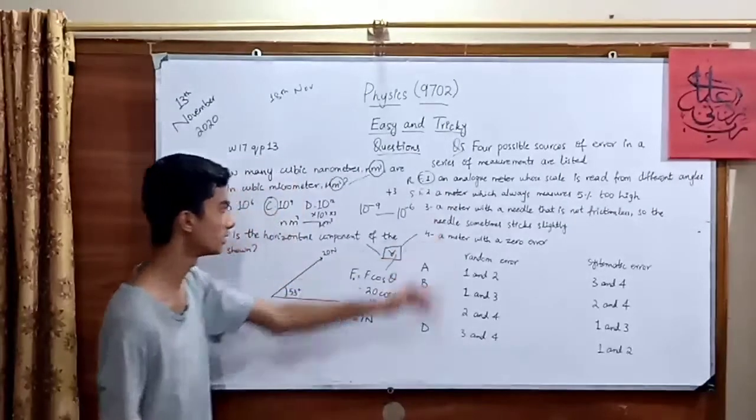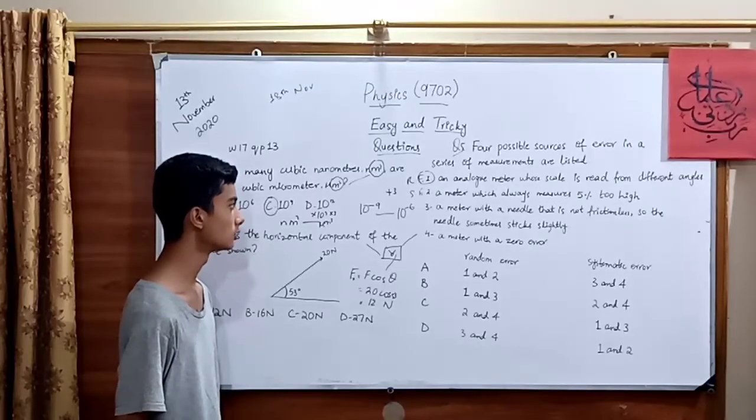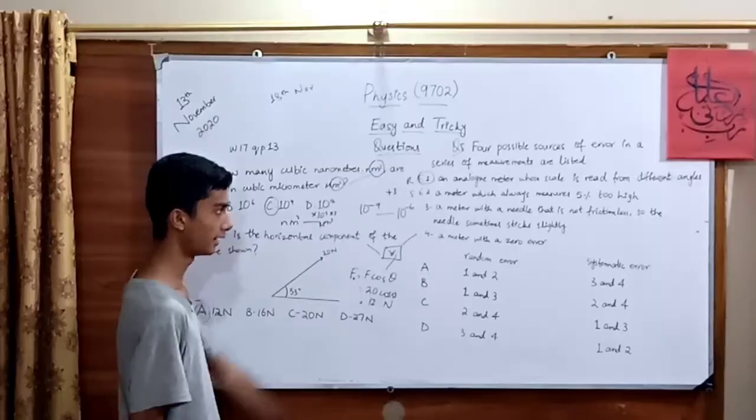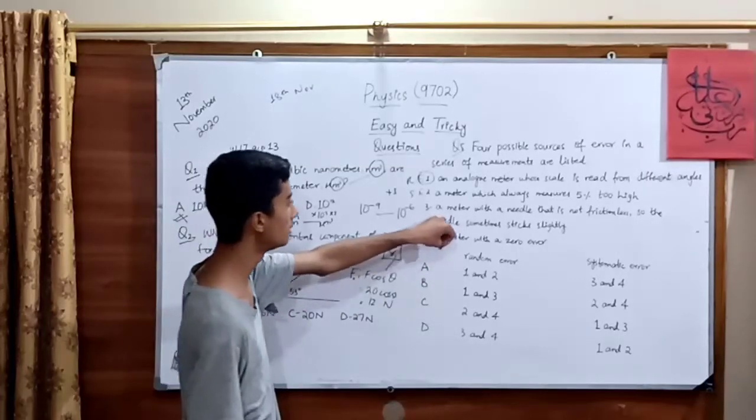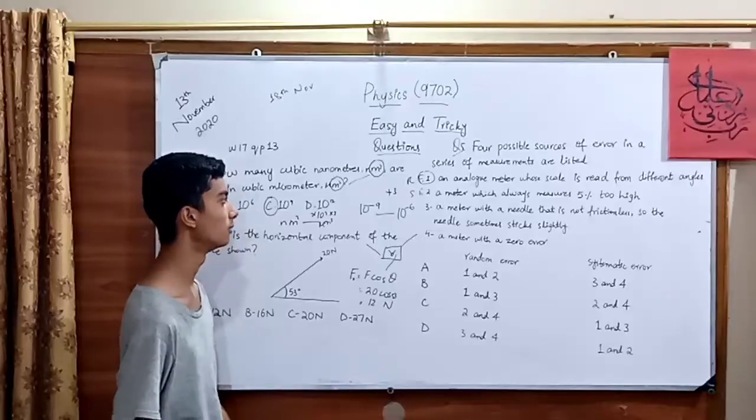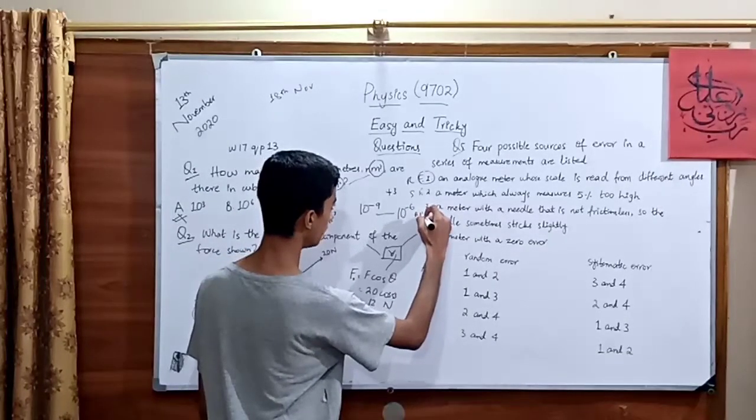Moving towards the third option. It states that a meter with a needle that is not frictionless, so the needle sometimes sticks slightly. After reading it twice and thrice, we came to know that it is a mistake of any human. So according to us, it would be human error or random error.